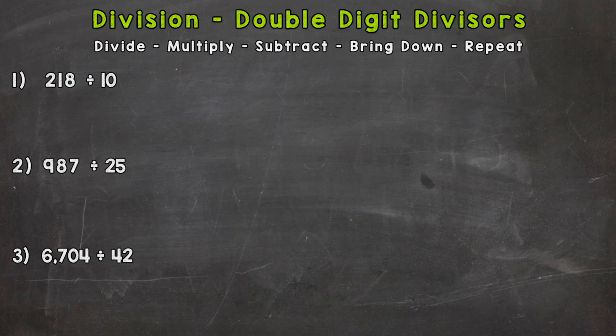The divisor is the number we are dividing by, the number on the outside of the division bar. Now we are going to use the same exact steps in our process that we've been using for any other division problem.